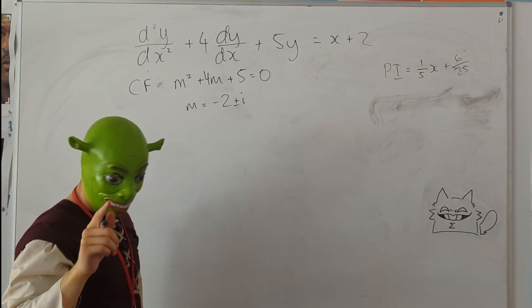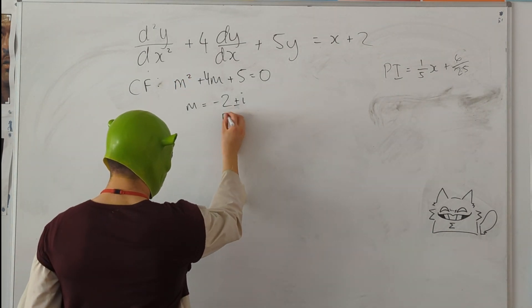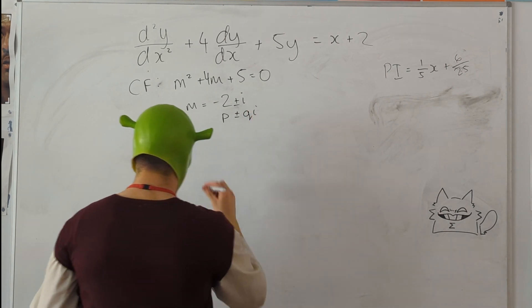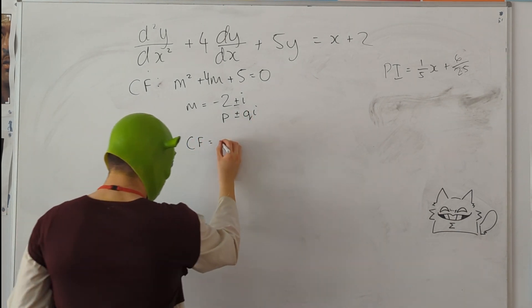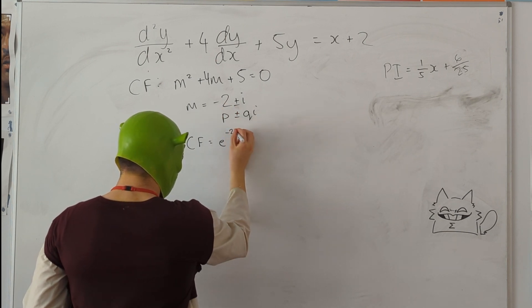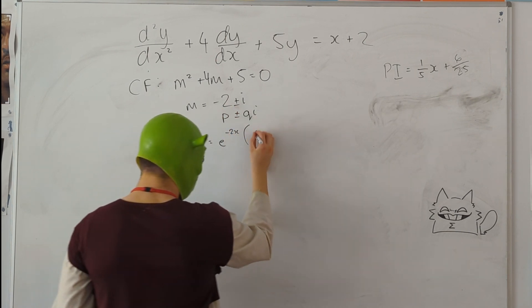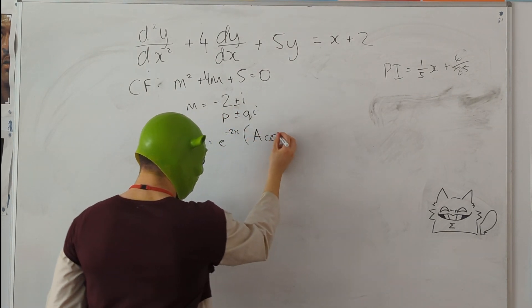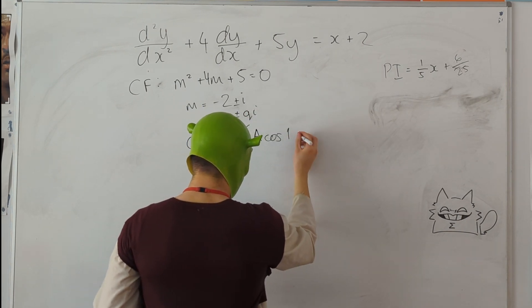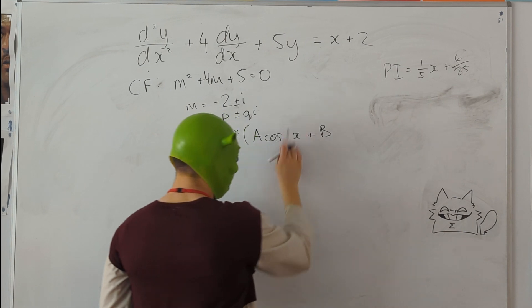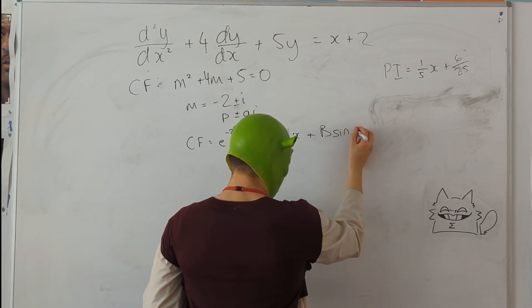We should get m is minus 2 plus or minus i, so we know that that is in the form p plus or minus qi. So now we know that the complementary function is going to be e to the px multiplied by A cos qx, which is one, plus B sin x.